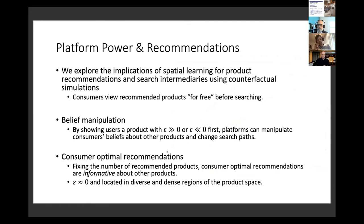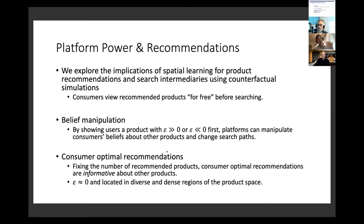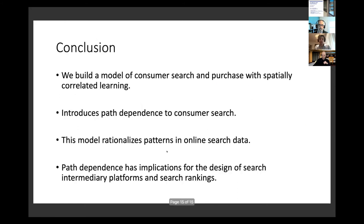Finally, we look at platform power and recommendations. We use simulations where a consumer views a recommended product for free before beginning their search. Platforms can manipulate consumers' beliefs by showing products with high or low utility relative to nearby products, potentially changing the direction of consumer search. Consumer-optimal recommendations should be informative - they should not have extreme idiosyncratic utility draws and should be located in diverse and dense regions of the product space.